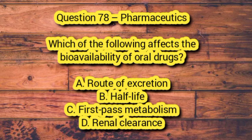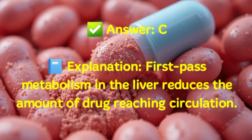Question 78 – Pharmaceutics. Which of the following affects the bioavailability of oral drugs? A. Route of excretion. B. Half-life. C. First-pass metabolism. D. Renal clearance. Answer: C. Explanation: First-pass metabolism in the liver reduces the amount of drug reaching circulation.